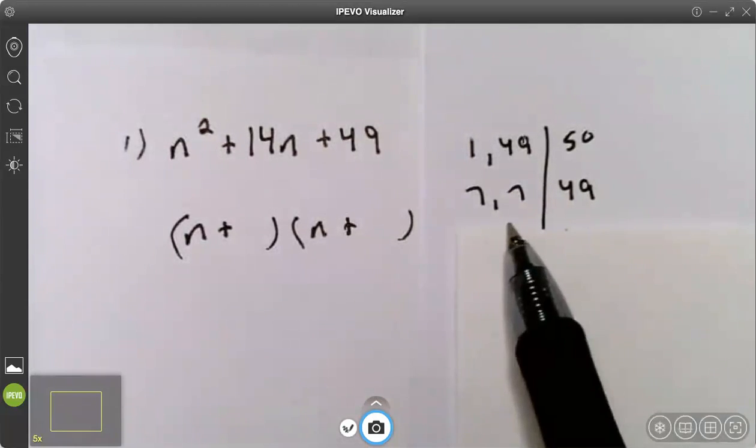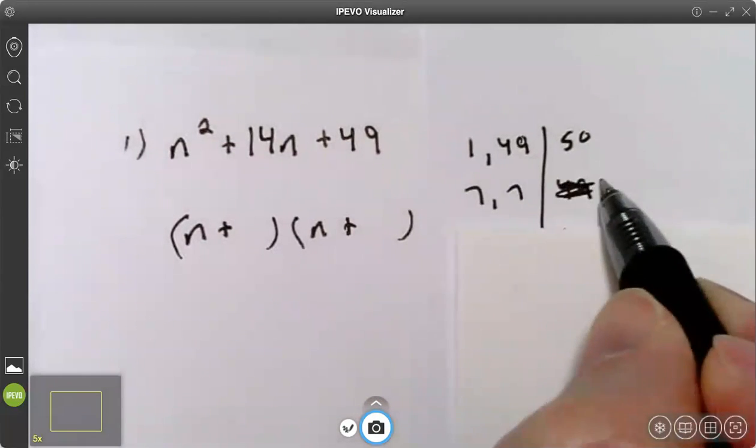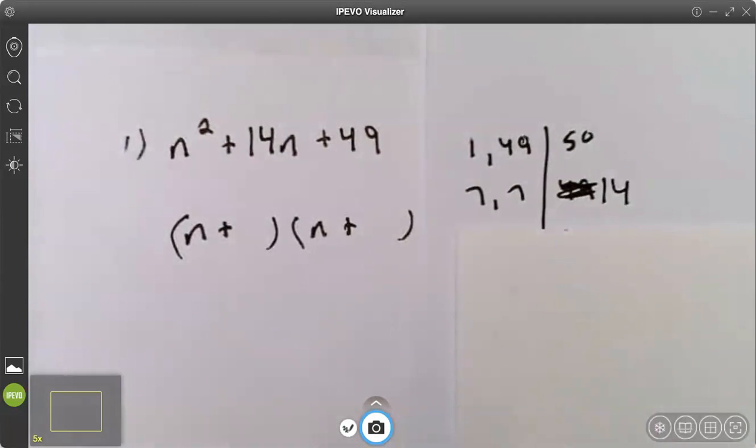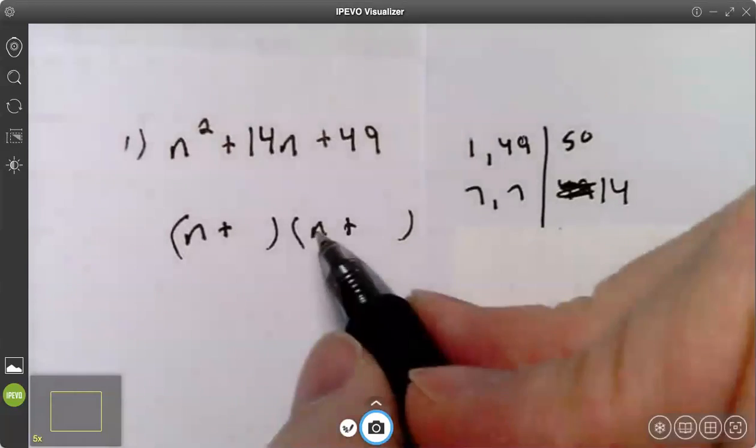Seven will go in there seven times. So seven times seven is 49. Seven plus seven is 14. So those are the numbers I'm looking for.